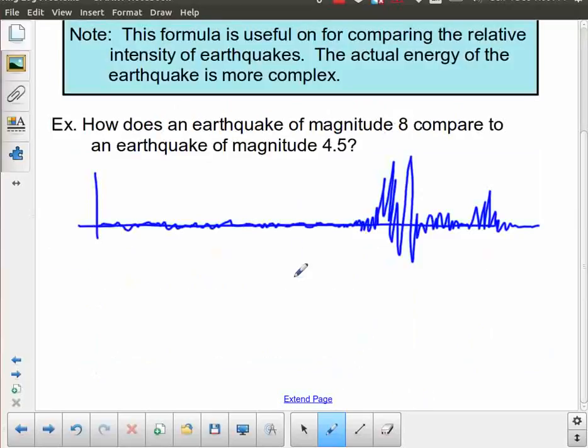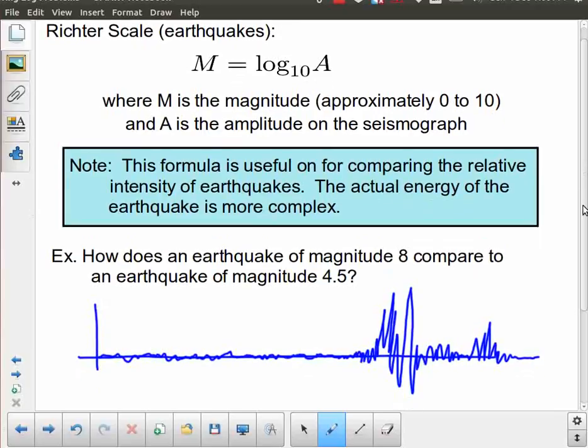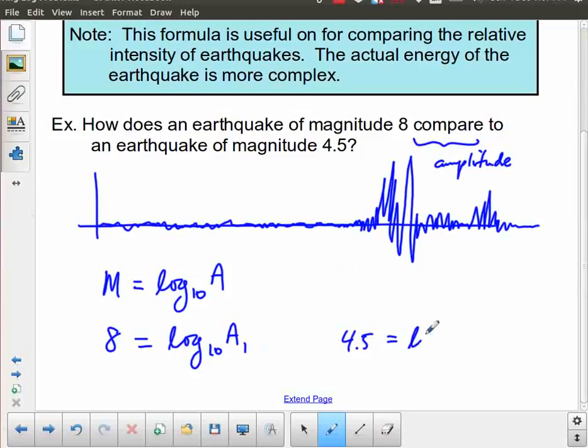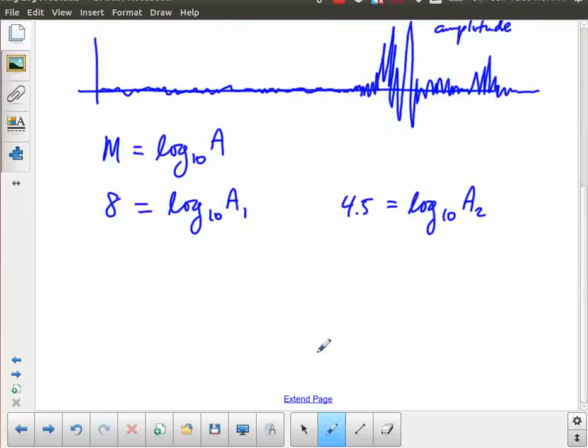In this case, we're asking the question, how does an earthquake of magnitude 8 compare to an earthquake of magnitude 4.5? The magnitude of an earthquake is log base 10 of the amplitude. When it says how does an earthquake compare, what we're talking about is the amplitudes. We start off with a magnitude 8 earthquake, which is log base 10 of A1. And then we have a magnitude 4.5 earthquake, which is equal to log base 10 of A2.